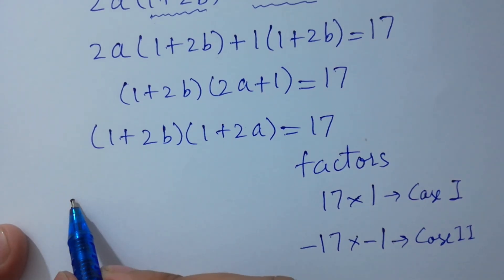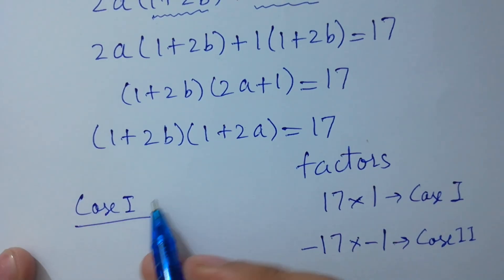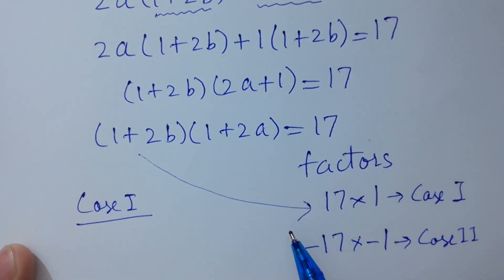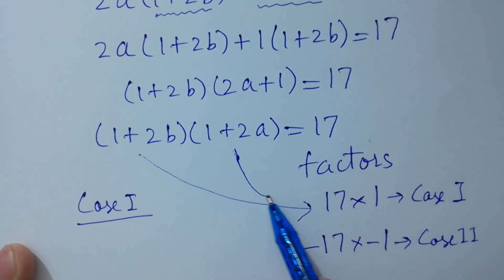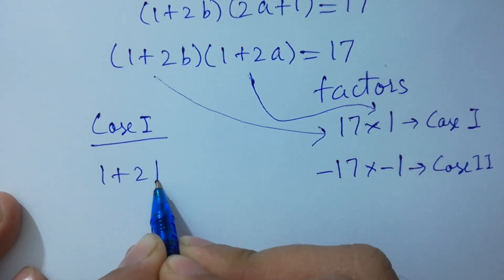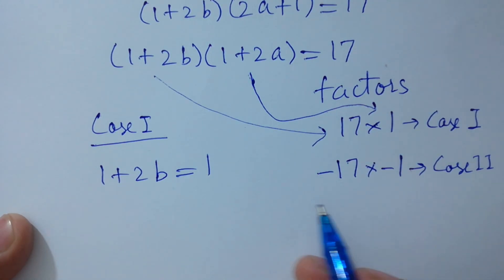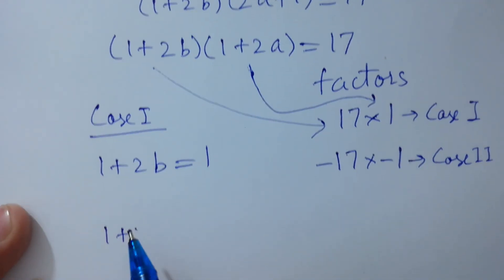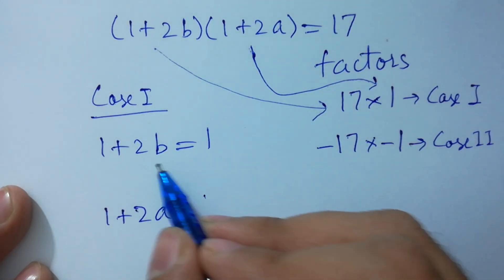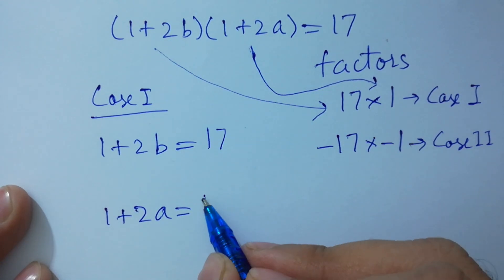For case 1, we set 1 plus 2√b equal to 17 and 1 plus 2√a equal to 1. Alternatively in case 1: 1 plus 2√b equals 1 and 1 plus 2√a equals 17, and 1 plus 2√a equals 1.